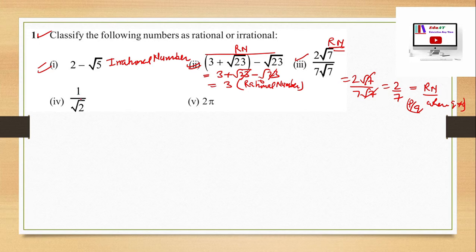Fourth part: 1 by root 2. Here 1 is a rational number and root 2 is an irrational number. So this is the division of a rational number by an irrational number. So this will be an irrational number.